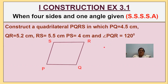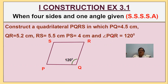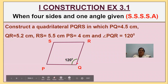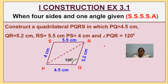First, we have to draw a rough diagram with the given measurements. We have to indicate the angle — the angle is at Q, which is in the middle. So the angle of 120 degrees will be at Q. We write the measurements on this rough diagram.